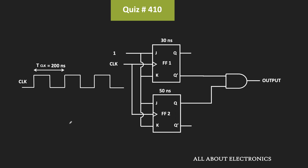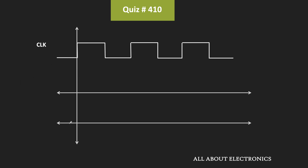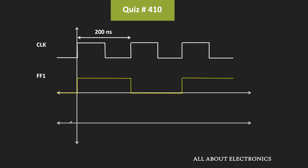Let us see the output waveform of the first flip-flop. This is the clock signal given to the flip-flop, and its time period is equal to 100 ns. Since the duty cycle of this clock is 50%, its on time will be equal to 100 ns. If this first flip-flop does not have any propagation delay, initially we assume both flip-flops are reset to 0. At the clock transition, its output will get toggled to 1, and it will remain in that state until the next rising edge.